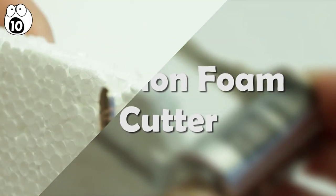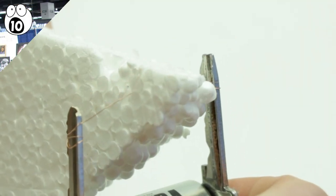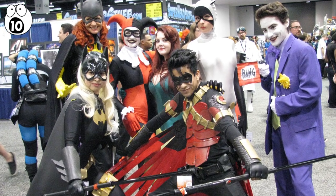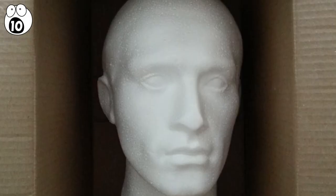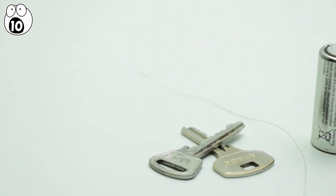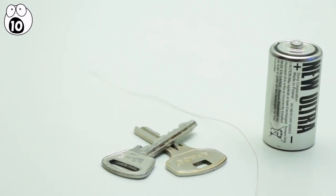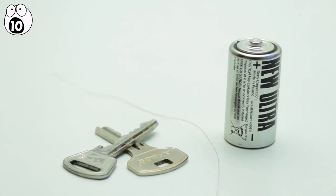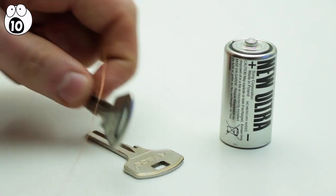Number 10: Precision Foam Cutter. This can be a sure-fire advantage for any cosplay enthusiast or those who make crafts and other things out of foam. All you'll need for this is the following: two old silver keys, a flexible and conductive wire, perhaps from an old broken soldering iron, and a C battery.